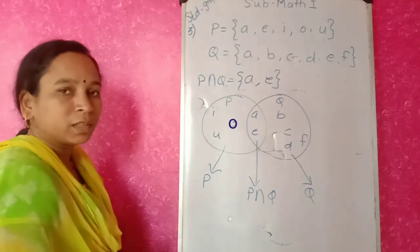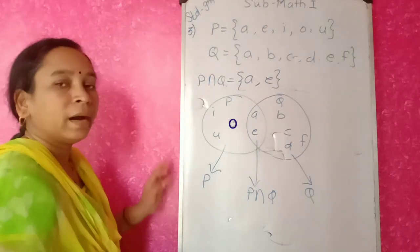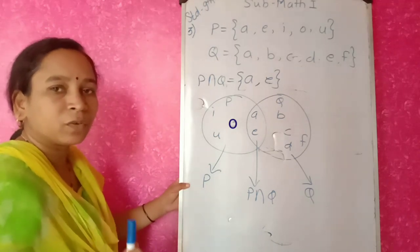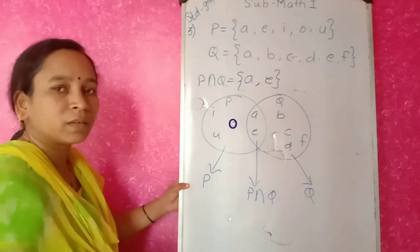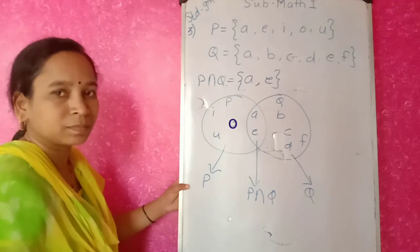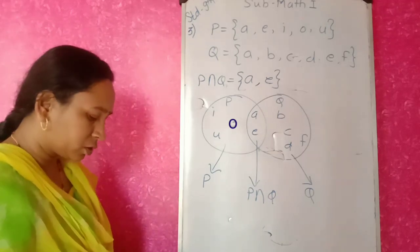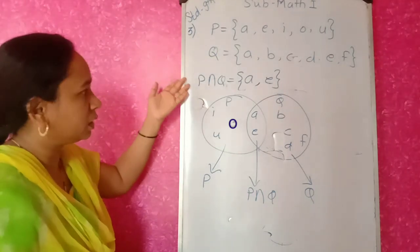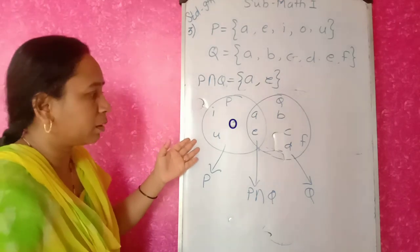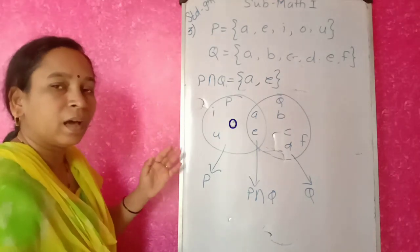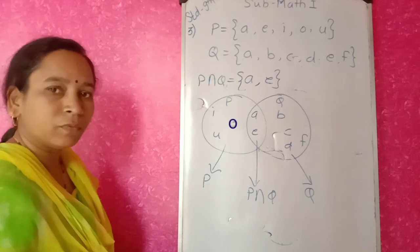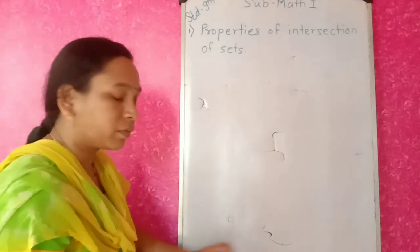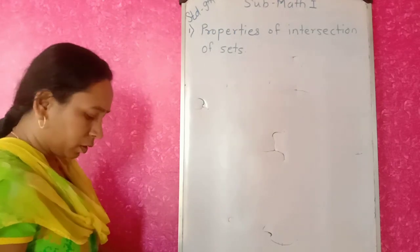I hope you have understood the intersection of the sets. At the end of this video I have asked you one question — I expect all of you to give the answer in the comment box. Now let's study the properties of intersection of sets. We have seen how to write the intersection and its diagrammatic representation; now we will go for the properties.